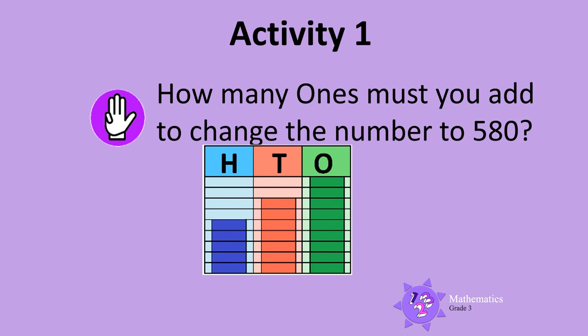Let's use the same place value diagram. We know that the number shown on this place value diagram is 579. We want to know how many ones we must add to change the number to 580. Can you see that we must add 1? Well done!